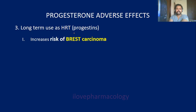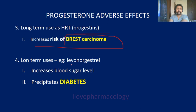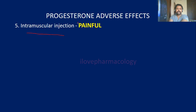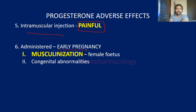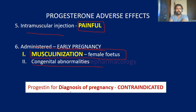On long-term use as hormone replacement therapy, progesterone increases the risk of breast carcinoma. Long-term use of levonorgestrel can increase blood sugar levels, thereby precipitating diabetes. Intramuscular injections of oily preparations can be very painful, and if administered during early pregnancy, can cause masculinization of the female fetus and genital abnormalities. Therefore, progestins are contraindicated during early pregnancy and should not be used for diagnosis of pregnancy.